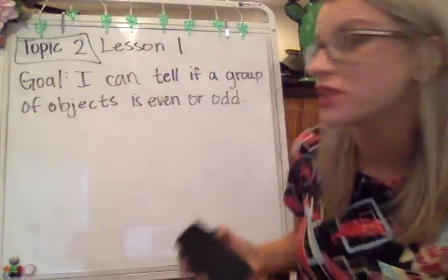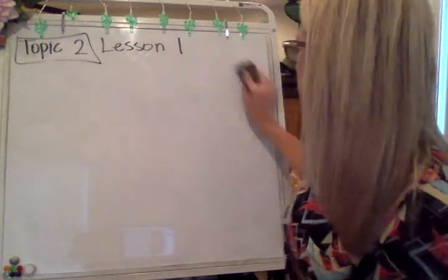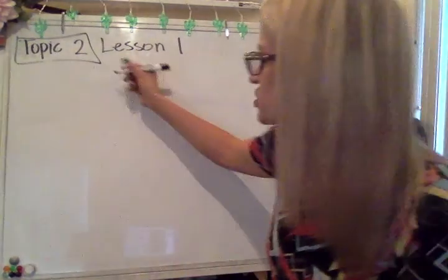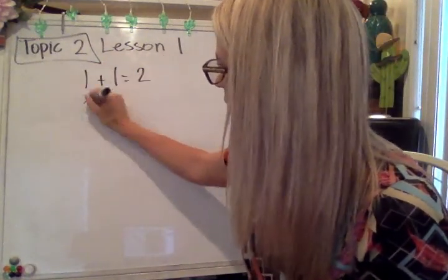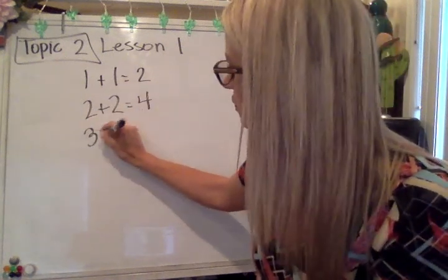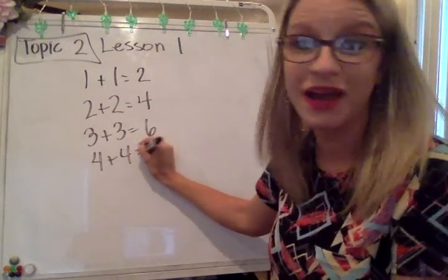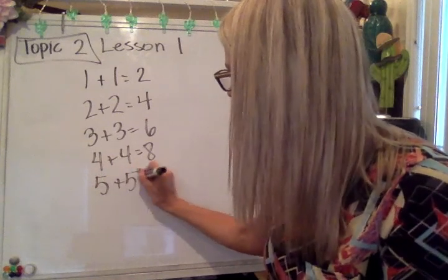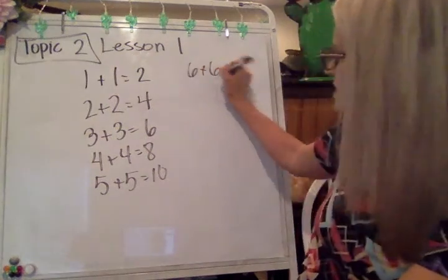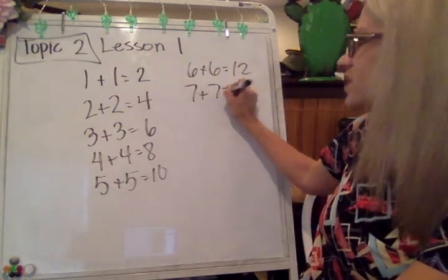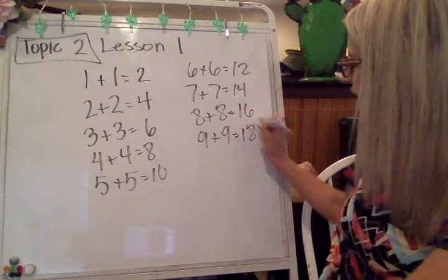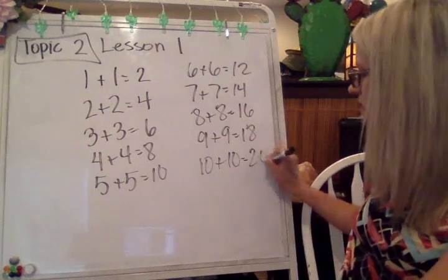Some things I want you to remember that you've already learned — think back to when we talked about doubles and near doubles. I'm going to draw out the equations for some doubles. One plus one has a sum of two. Two plus two is four. Three plus three is six. Four plus four is eight. Five plus five is ten. These are all equations that you should have memorized. Six plus six is twelve, seven plus seven is fourteen, eight plus eight has a sum of sixteen, nine plus nine has a sum of eighteen, and ten plus ten has a sum of twenty.